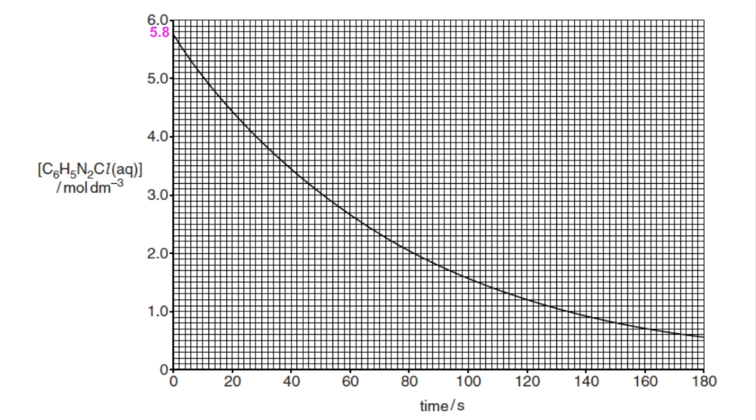So if we look at the concentration at the very start of the reaction, that's at 5.8 moles per decimetre cubed. So the half-life is the time it takes for the concentration to decrease by half. So that's going to go down to 2.9. So you follow along to the graph and then drop down to the x-axis. So that time period there is about 54 seconds.